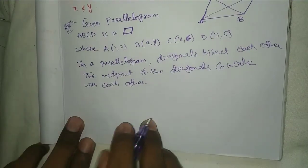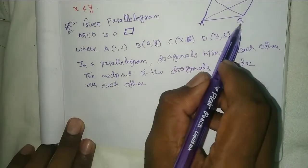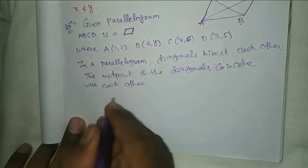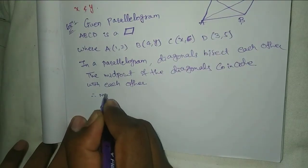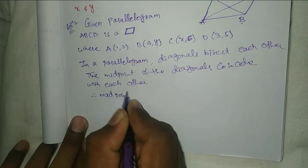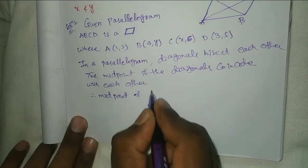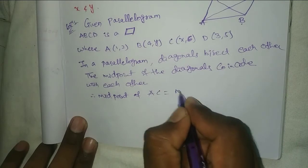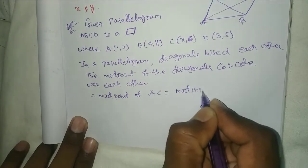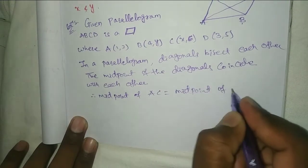The midpoint of AC equals the midpoint of BD. Therefore, midpoint of AC equals midpoint of BD.